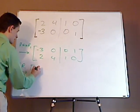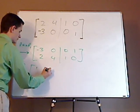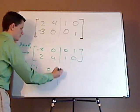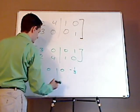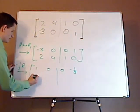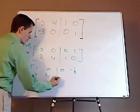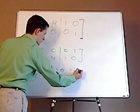When I do that, this becomes a positive one, this is a zero, this is going to be zero, and this is going to be negative one third. This is two, four, one, zero.